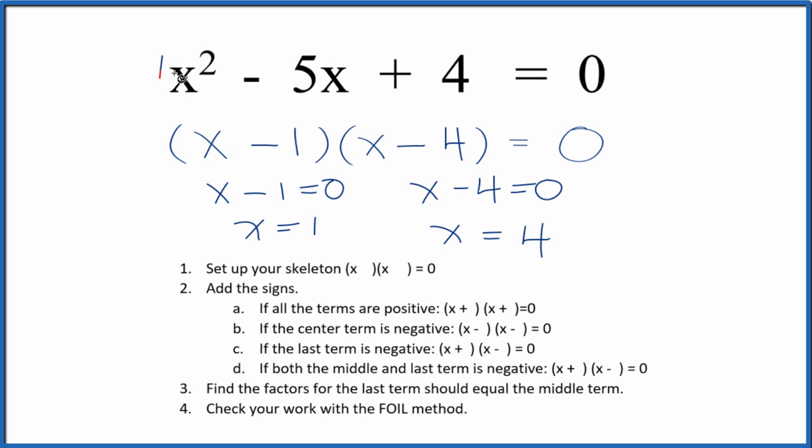Likewise, if you put 4 in for x and you did the math, all of this would equal 0 as well. And if you use the quadratic equation, you'll get x equals 1 and x equals 4 as well.